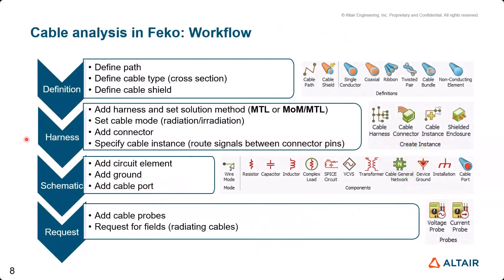The workflow for cable analysis in FICO is simple. We start by defining the cable path and the cable type, which is the cross section of the cable. The cross section can be any of the predefined definitions available in FICO — you can define whatever cable cross section you need. You can also define the cable shield and customize its properties according to your requirements.